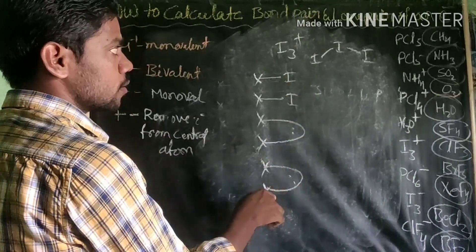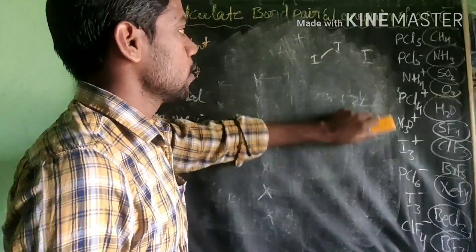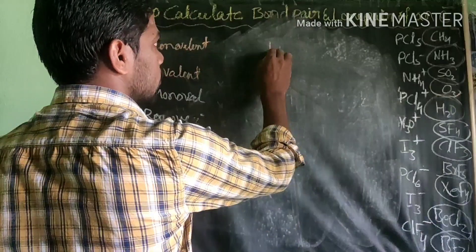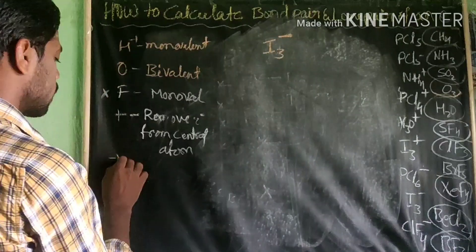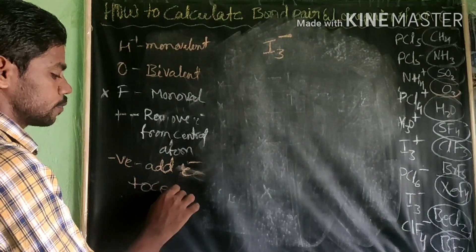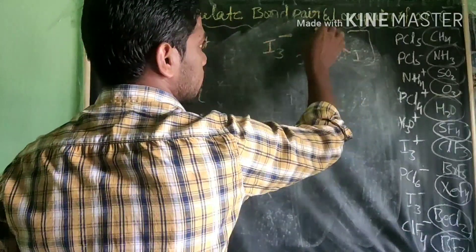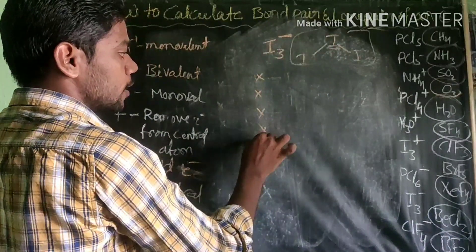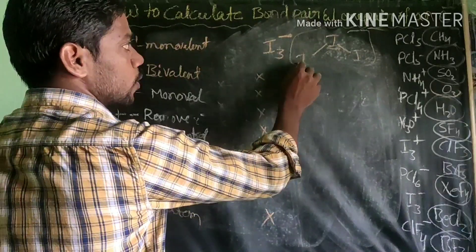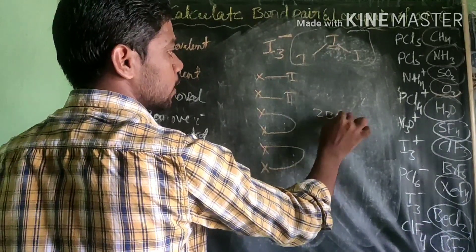I3+ has 2 bond pairs and 2 lone pairs. For negatively charged molecules, we add one electron to the central atom. I3-: iodine is a 17th group element with 7 valence electrons. Adding 1 electron for the negative charge gives 8 electrons. With 2 surrounding iodine atoms forming 2 bonds, I3- has 2 bond pairs and 3 lone pairs.